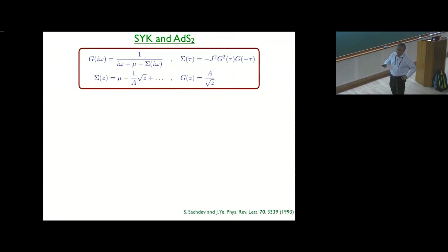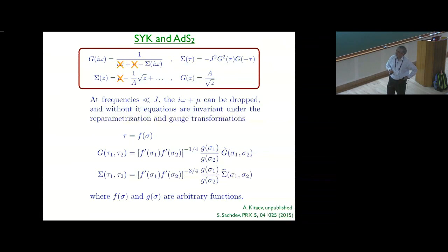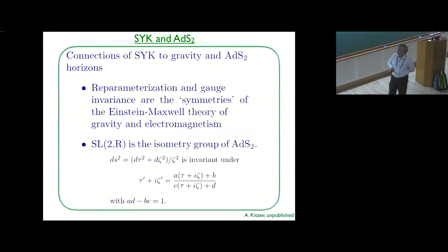Now of course we understand these similarities in the two models at a much deeper level. This is something David mentioned, so I can go fairly quickly. When you ignore these terms only important at high energies, the model has a reparametrization invariance. Furthermore, if you look at the saddle point solution or the Green's function, that's invariant under only a subgroup of reparametrization which is SL2R. So roughly, the SYK model has a low energy theory which has full reparametrization invariance, but when you look at the saddle point itself, that's broken to SL2R.